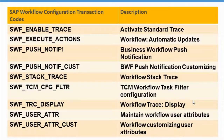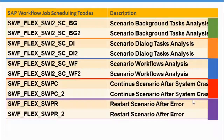These transaction codes are not available in ECC6 — they are brand new in S4HANA. The next area we are going to cover is SAP Workflow Job Scheduling transaction codes. Previously, people were getting confused about the different types of jobs that workflow needs to run, and programs were provided instead. Now they have given transaction codes, so it is very easy to schedule background jobs based on these transaction codes.